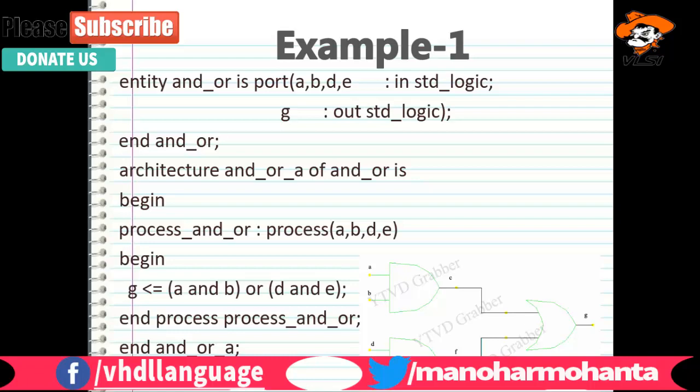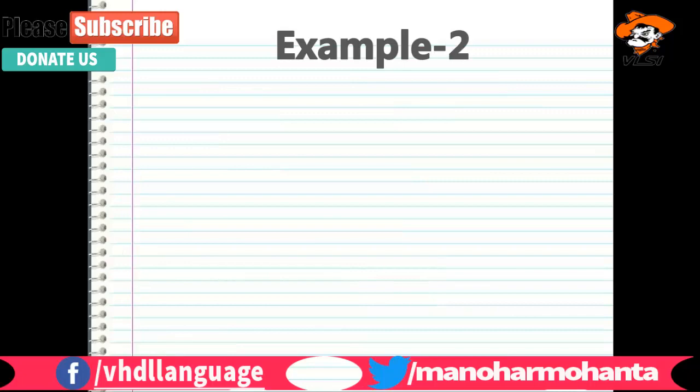This was an example with a single process. In more complex programs I will use two or three processes at a time because every operation should run in parallel. For example, if I have an adder-subtractor, the addition and subtraction operations should not wait for each other. If I write them in a single process, one by one they execute and the delay increases. Executing them in parallel reduces that delay.